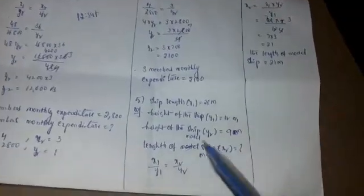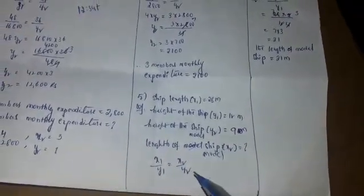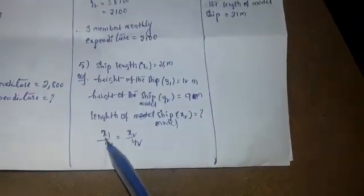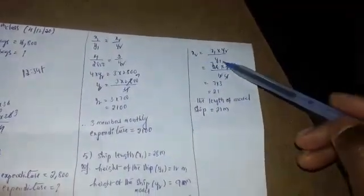It belongs to direct proportion. X1, Y1, X2, Y2. Cross multiplication: X1 into Y2 by Y1, X1 into Y2 by Y1, X2...